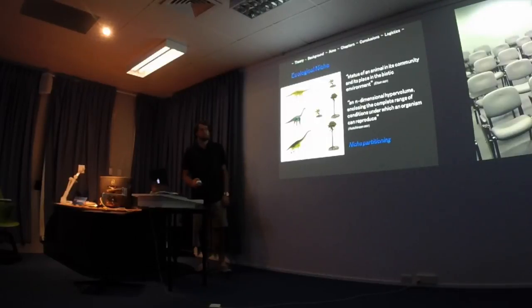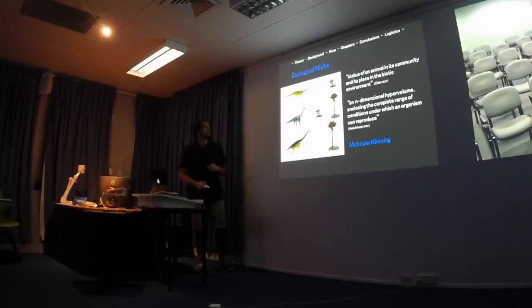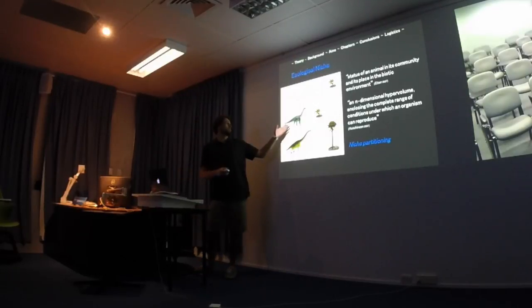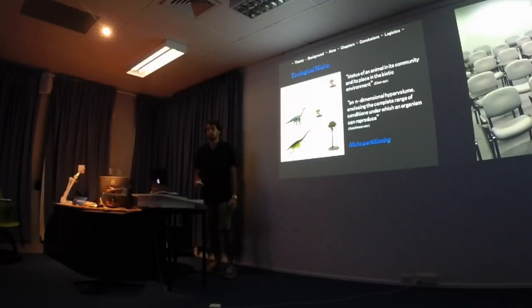What is niche partitioning? If we have a third dinosaur that can exist in both environments, and you take away one of the other dinosaurs, this animal can partition towards the small shrub, whereas the other remains partitioned towards the tall trees.